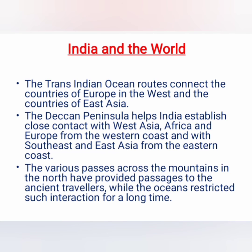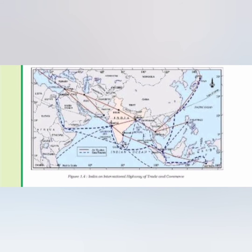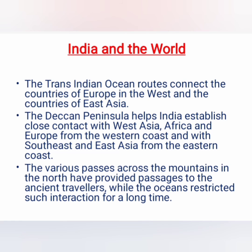The Indian landmass has a central location between the east and west Asia. India is a southward extension of the Asian continent. The trans-Indian Ocean routes connect the countries of Europe in the west and the countries of East Asia. Figure 1 shows the central position of India and its importance on air routes and sea routes. Most of the air routes and sea routes are connected through India. No other country has as long a coastline on the Indian Ocean as India.